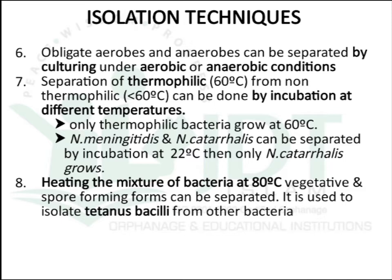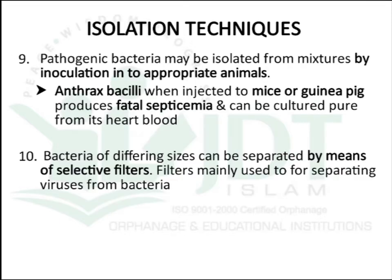The eighth method is heating the mixture with bacteria at 80°C. Vegetative and spore-forming bacteria can be separated — only spore-forming bacteria will survive after 80°C treatment. This is used to isolate tetanus bacillus from other bacteria.